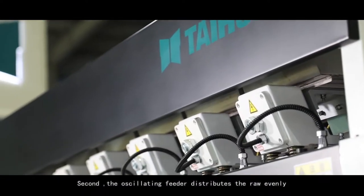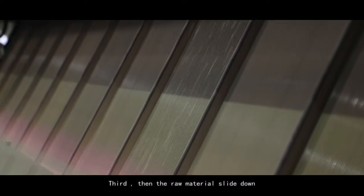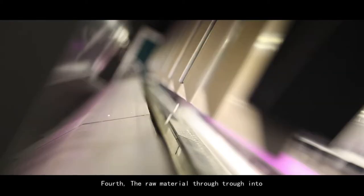Second, the oscillating feeder distributes the raw evenly. Third, then the raw material slide down from oscillating feeder to the trough. Fourth, the raw material through trough into the sorting room which will be identifying.